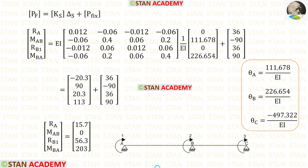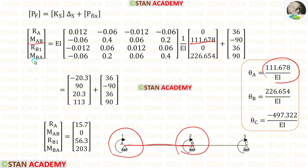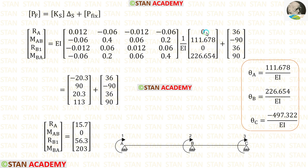Now let us find the final moments and reactions in span AB. Applying the element stiffness matrix for span AB and forming the displacement matrix: in span AB we have the first and second coordinates. In the first coordinate we have moment M_AB, for which we apply the value of theta A; in the second coordinate (point B) we apply theta B. For the remaining terms we apply 0. We also apply the fixed end moments and reactions calculated initially. After the calculation we obtain the final reactions and moments for span AB.